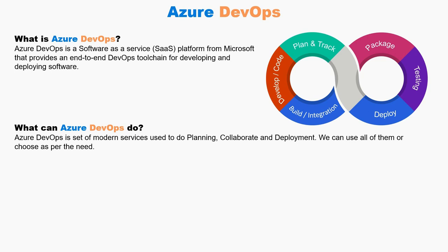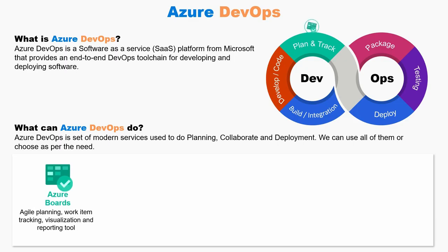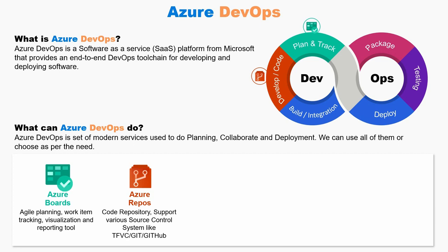The first service we have in the list is Azure Boards. It supports planning and tracking work, code defects, and issues using Kanban and Scrum methods. Then we have Azure Repos, which is a source code repository that supports various source control systems like TFVC, Git, and GitHub.